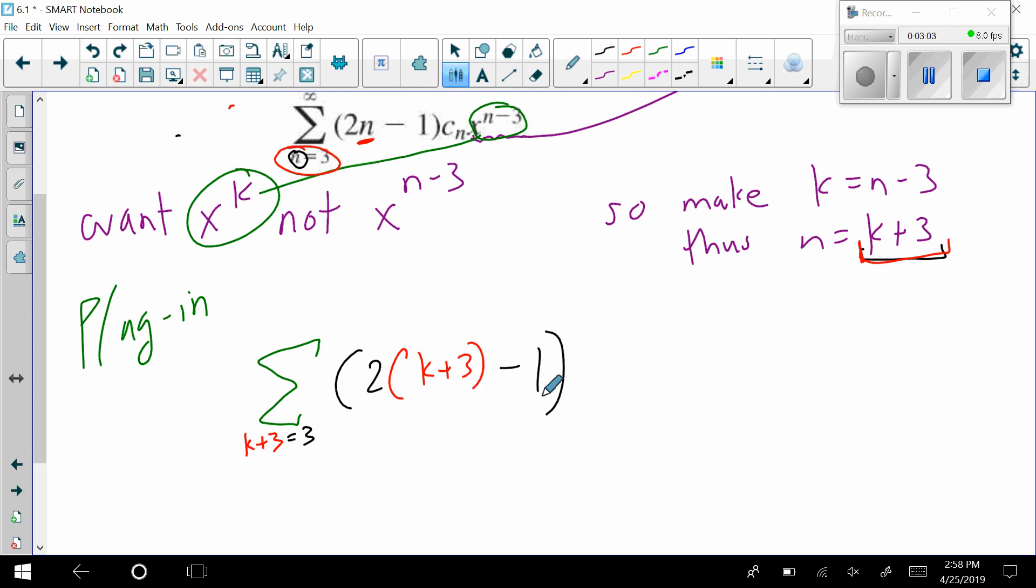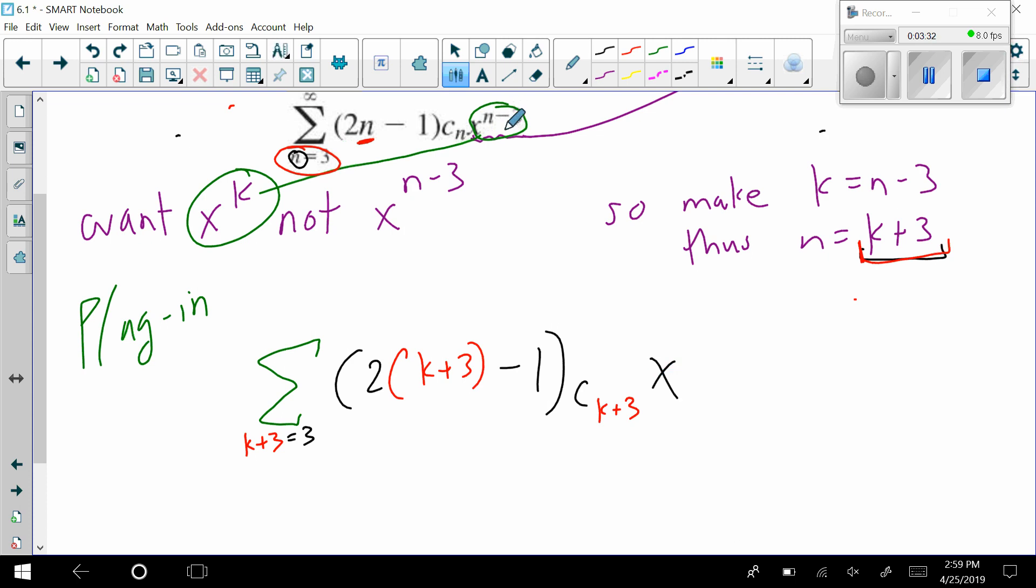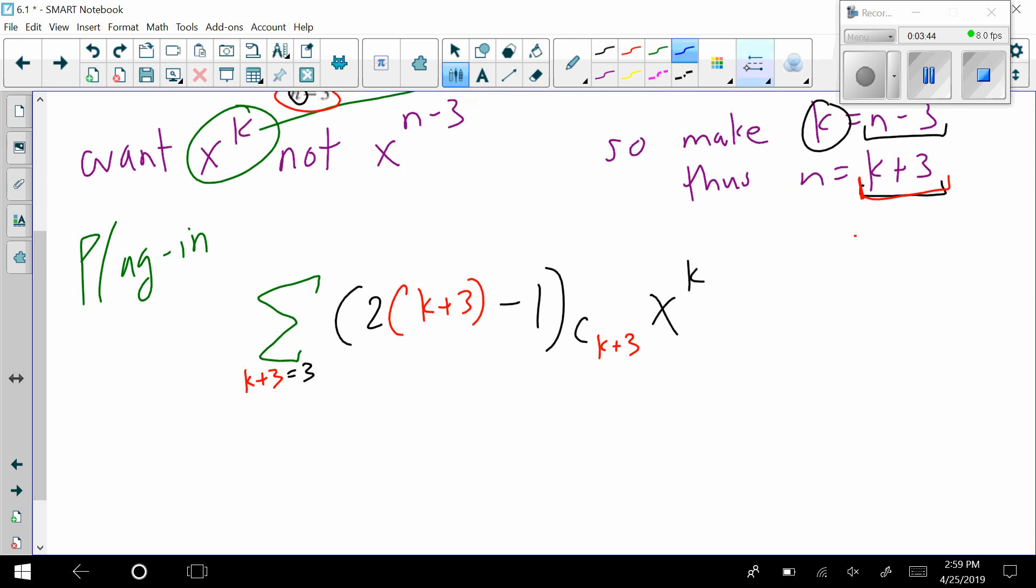Then it's minus one, then it's c sub n. Well again, it's not there anymore, so I have c sub, what's n? Well the n is this k plus three here, so I have a k plus three. And then I have x to the n minus three. Well n minus three, that's this thing here, is equal to just k, so I can just put a k up here.